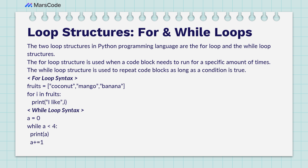We say 'for i in fruits' and then print 'I like i'. The variable i represents each element in the list as the loop goes through it. So it will print: I like coconut, I like mango, I like banana — starting from index position zero. If I wanted to find the index position of any item, I'd write the list name, dot index, and the item in quotation marks, and printing that would return the index position.